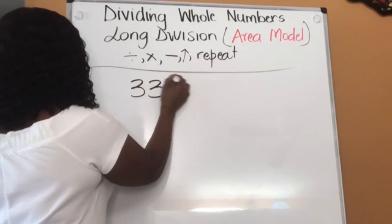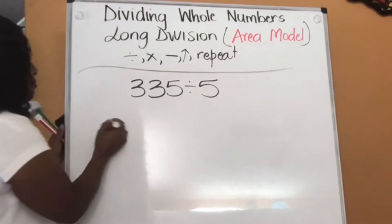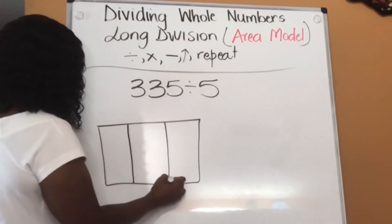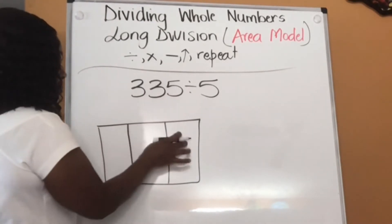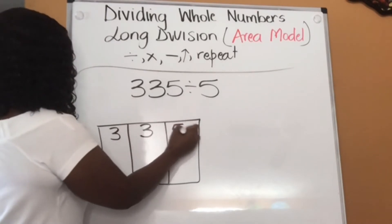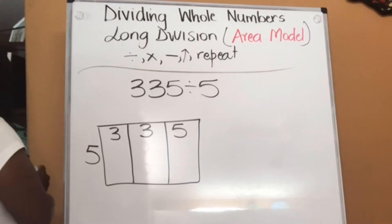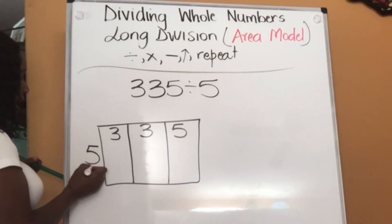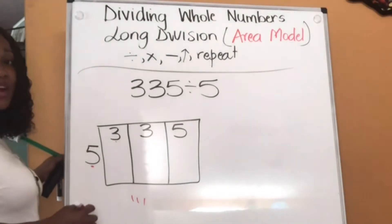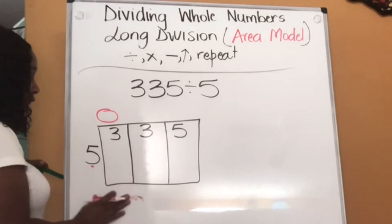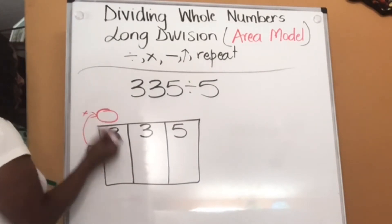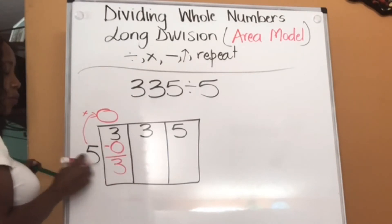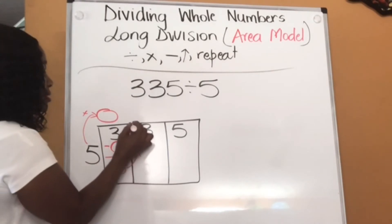Let's try another one: 335 divided by 5. Again, I'm drawing my model. I have 1, 2, 3 digits, so I'm dividing into 1, 2, 3 parts — each digit takes a box. So: 3, 3, 5, and I'm dividing by 5 out here. Step 1 is to divide. How many sets of 5 can I get from 3? I cannot get a set of 5, so it's 0. Then I'm going to multiply: 5 times 0 is 0. Now I'm going to subtract: I have 3 and I give away 0, I'm left with 3. I bring it across, so now this becomes 33.